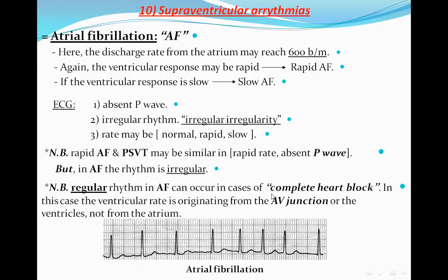In complete heart block, the atria will not pass any electrical activity to the ventricles, and the ventricles will initiate their own rhythm from either the junction or the ventricles themselves, making the rhythm regular. Regularization of atrial fibrillation is therefore a sign of complete heart block, and you should suspect digitalis toxicity. Rapid AF and paroxysmal supraventricular tachycardia may appear similar — both have rapid rates and absent P-waves — but AF rhythm will be irregular whereas in PSVT it will be regular.